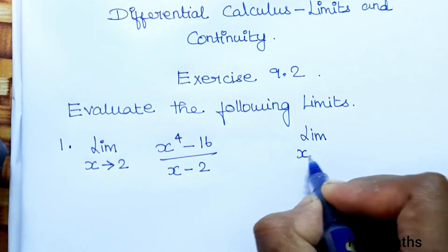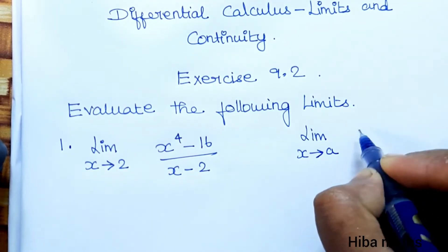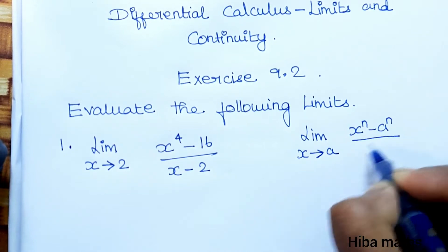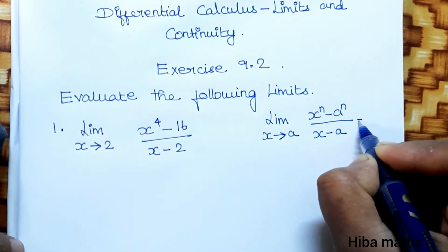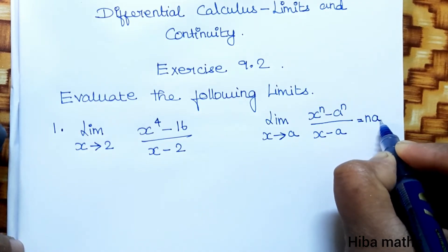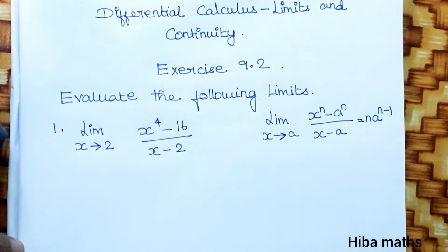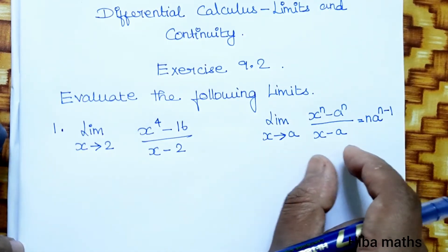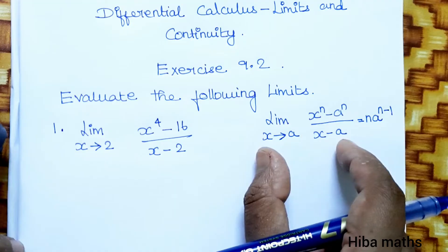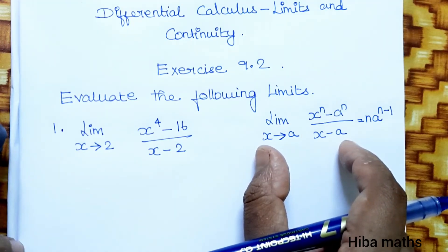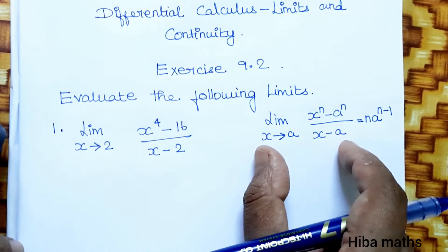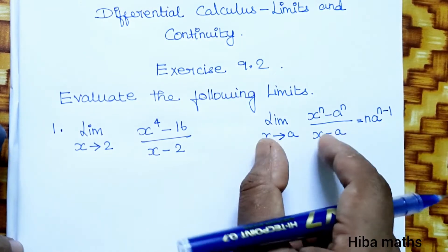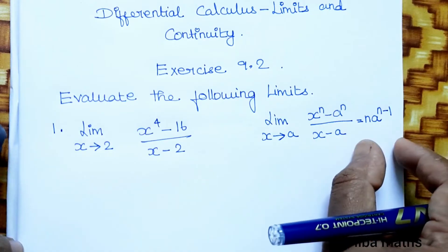When the limit x tends to a, x power n minus a power n divided by x minus a is equal to n into a power n minus 1. This is the standard formula. Let's look at the question: limit x tends to a, x power n minus a power n divided by x minus a, and simplify it using this format.